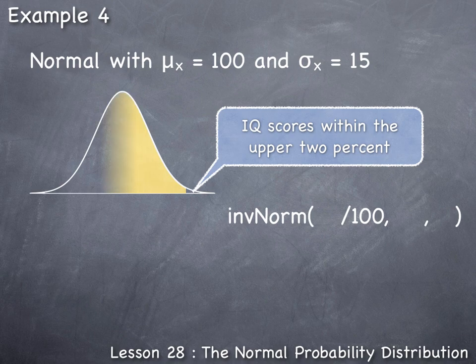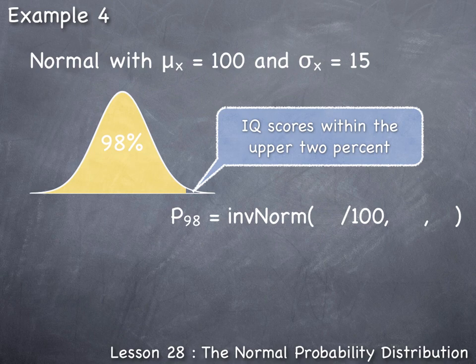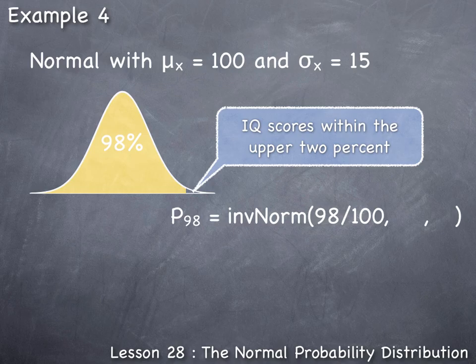The percentile here is where 98% of all IQ scores fall less than. The value for the inverse norm command that we enter first would be 98 for the 98%, but since the calculator is a decimal machine, we enter it either as 98/100 or in decimal form as 0.98.